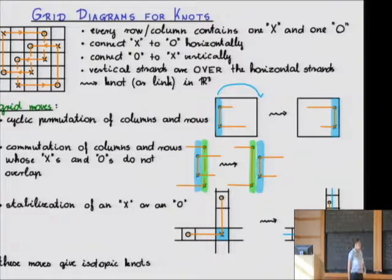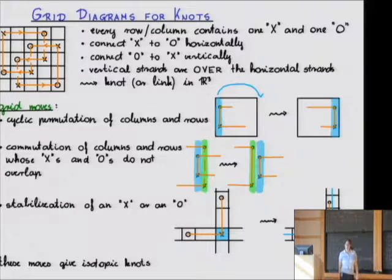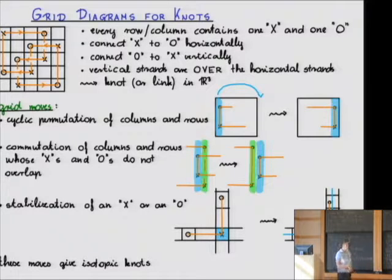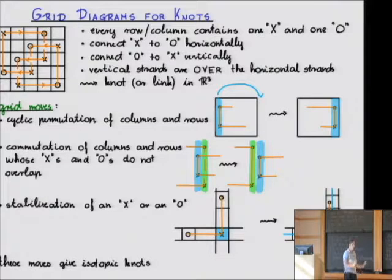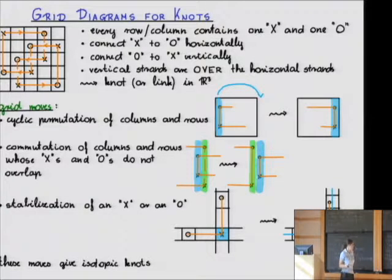The two different marks — X and O — give an orientation to the knot, because you go from X to O on the horizontal lines. The horizontal strand is the one that goes over. An audience member asks whether you could just put crosses everywhere instead. The answer is that you could put two X's, and in this interpretation it won't matter, but in a more general setting for this theory it would make a big difference.